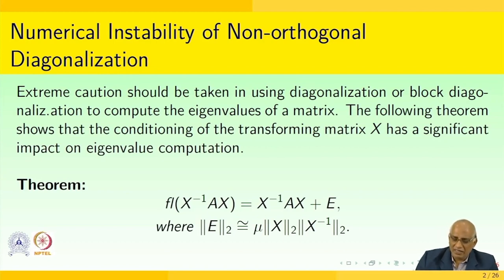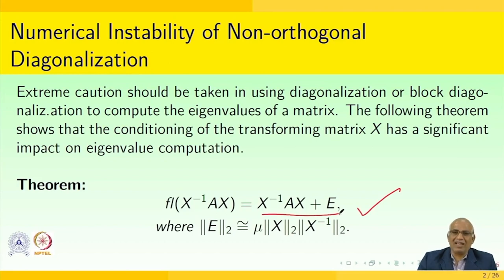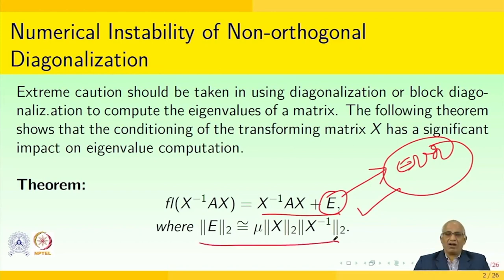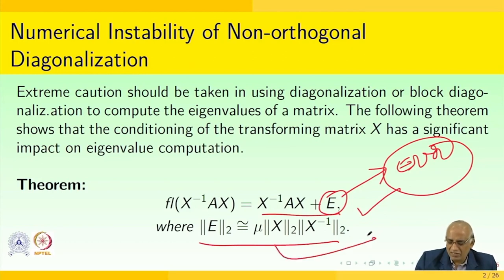The floating point computation of X⁻¹AX is essentially X⁻¹AX plus some error E, where the 2-norm of E is approximately μ times the 2-norm of X times the 2-norm of X⁻¹.